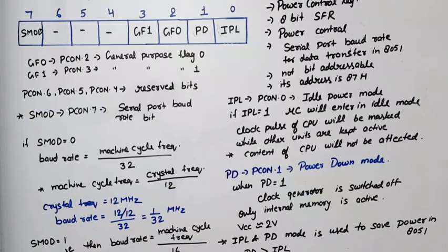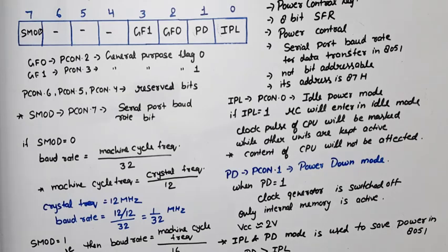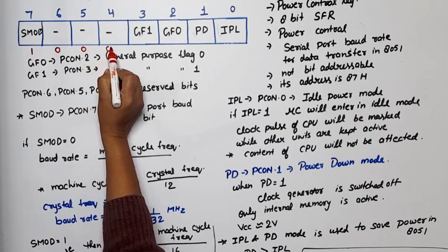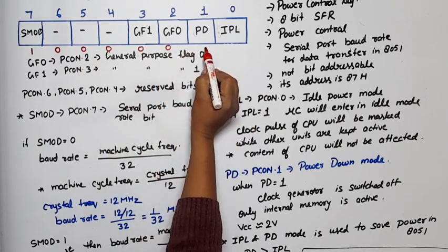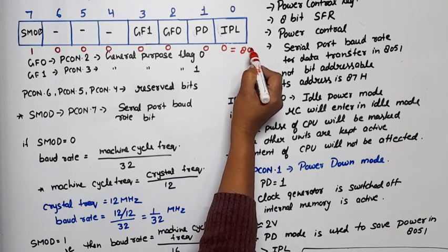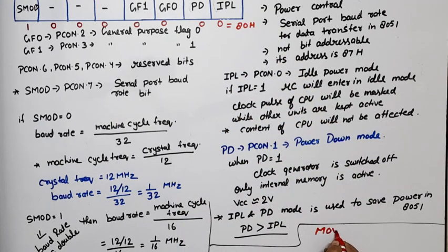Now suppose we have to set this bit, so what instruction will we use? What is the value of SMOD? It should be 1. Reserved bits 0 0 0. These also we take as don't care, so 0. Power control we don't need right now, so both values will be 0. Means if we talk in hex, what should be the value of PCON? 80H. Now for this, how will we write the instruction? We will write MOV PCON comma hash 80H. By using this instruction, this value will be loaded and PCON will control the baud rate of microcontroller 8051.